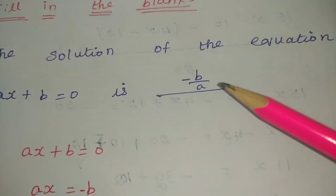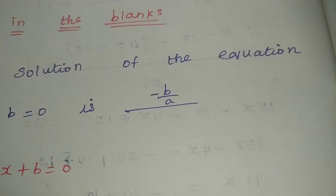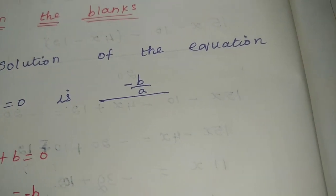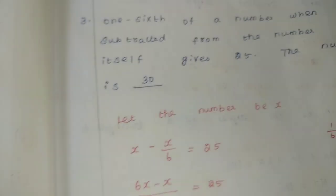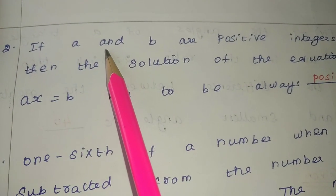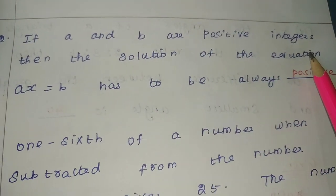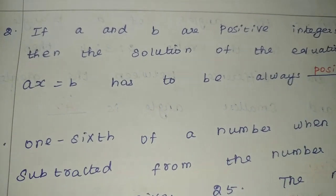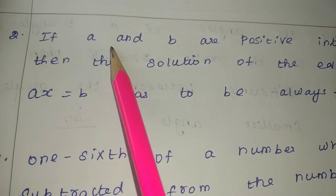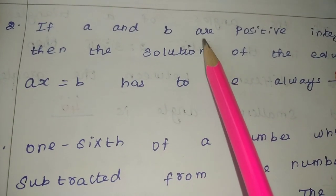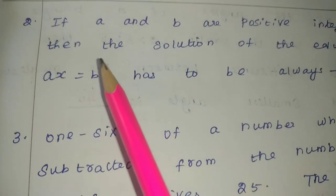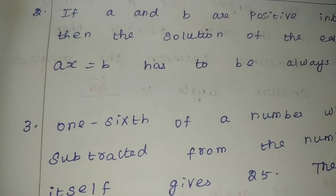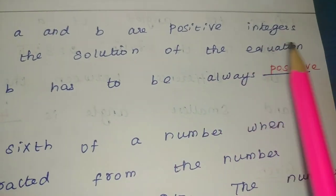Second problem: if a and b are positive integers, then the solution of this equation ax plus b has to be always dash. The value of a is positive and the value of b is positive.